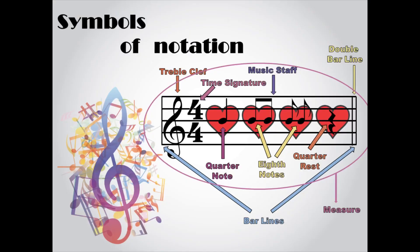The five lines that go across a page of music are called a music staff. The up and down lines that separate a music staff are called bar lines. The long squiggly symbol at the beginning of a music staff that tells you to use high pitches is called a treble clef. The 4-4 time signature tells you how many beats you're going to be using in a measure. Quarter notes fill up one beat. Two eighth notes together fill up one beat. And a quarter rest fills up one beat — it's just a beat of silence. And everything between the bar lines together is called a measure.